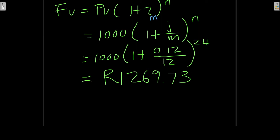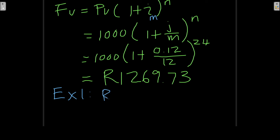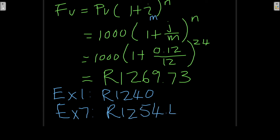I want you to compare that to the previous examples. In example 1, where we did simple interest, the future value was 1240 rands. In example 7, where we worked with compound interest but the compounding period was per year, the future value was 1254 rands and 40 cents. We already know that the future value will be more with compound interest compared to simple interest. And now we've discovered that the future value will also be more if the compounding period is shorter — in other words, if compounding is done more frequently.